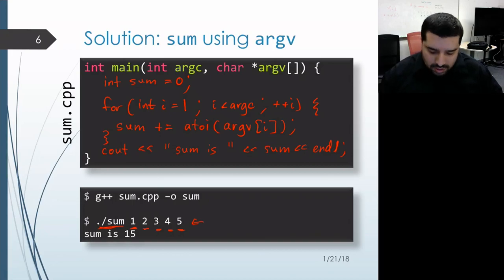We start our iteration at the first argument, convert that to the integer one, and continue to do that until we get through all the command line arguments. So the result is a sum of 15.